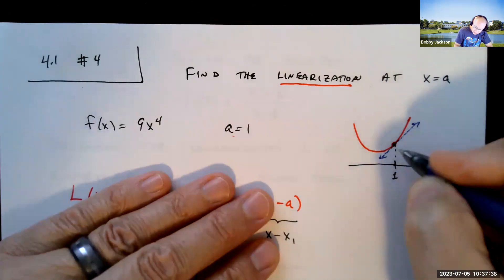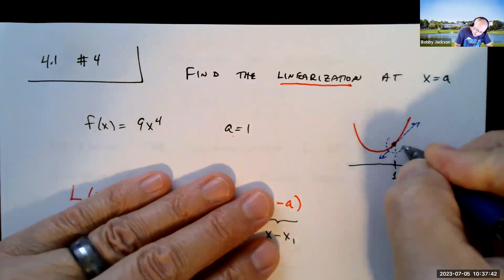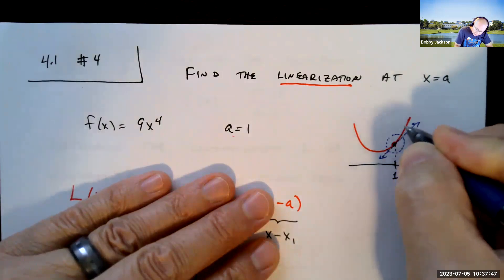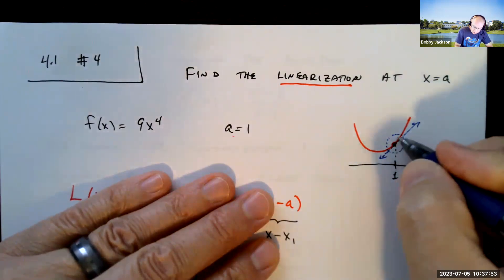And so we're approximating that, and if we sort of zoom in close to x equal 1, the graphs of the red function, f of x, and the graph of the tangent line are very similar, very close.